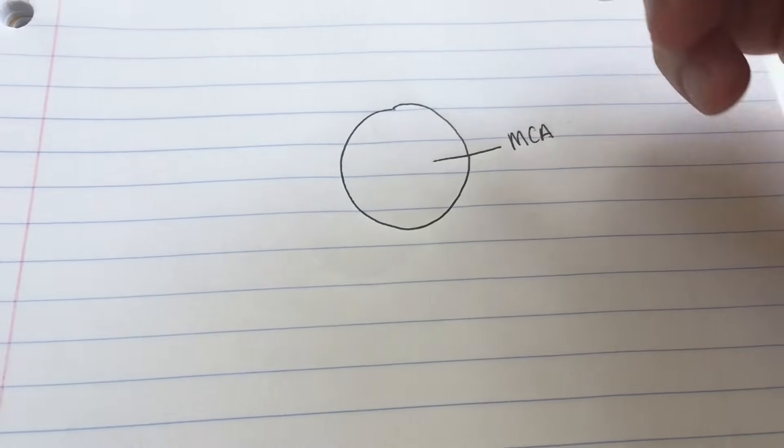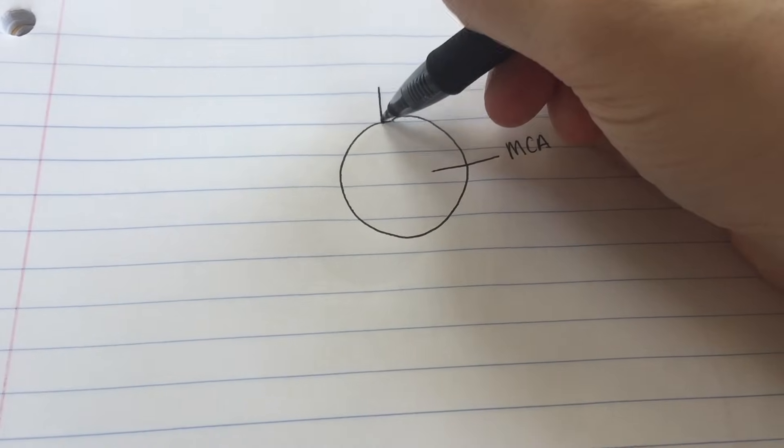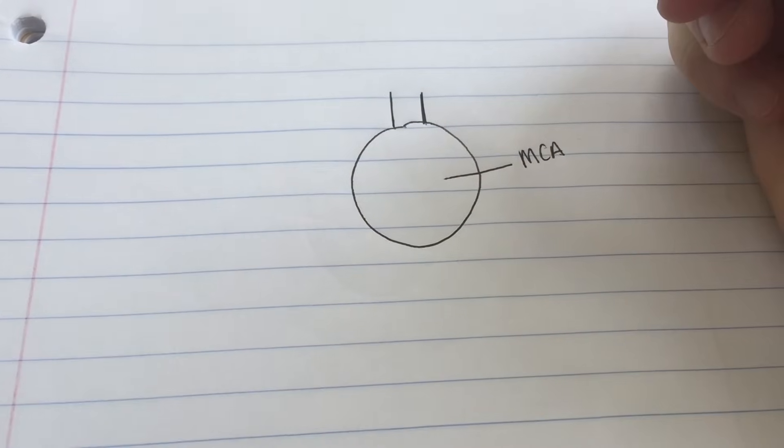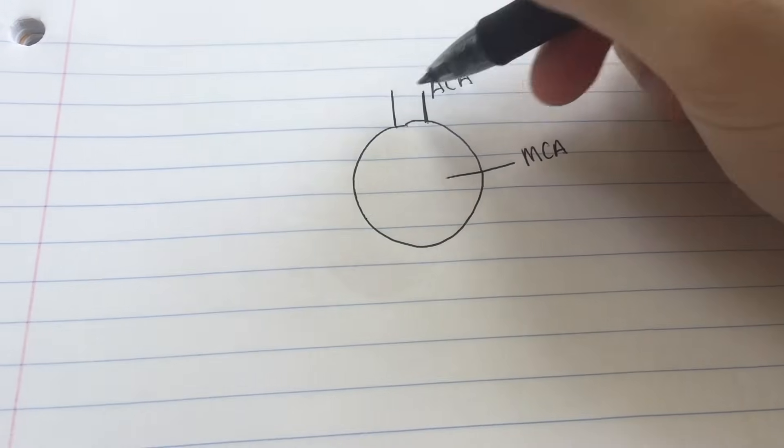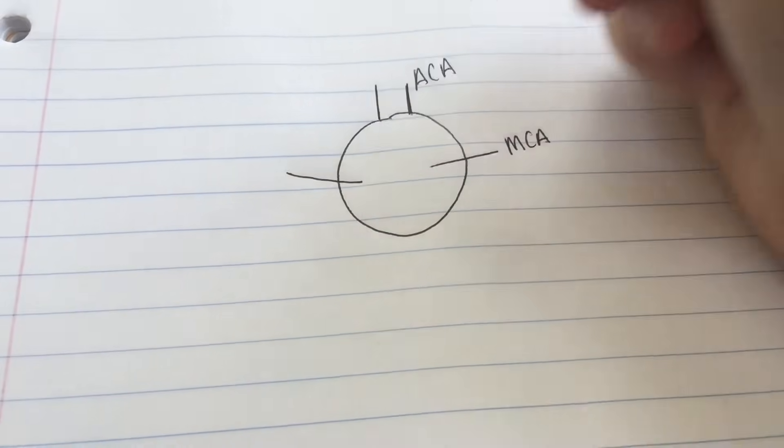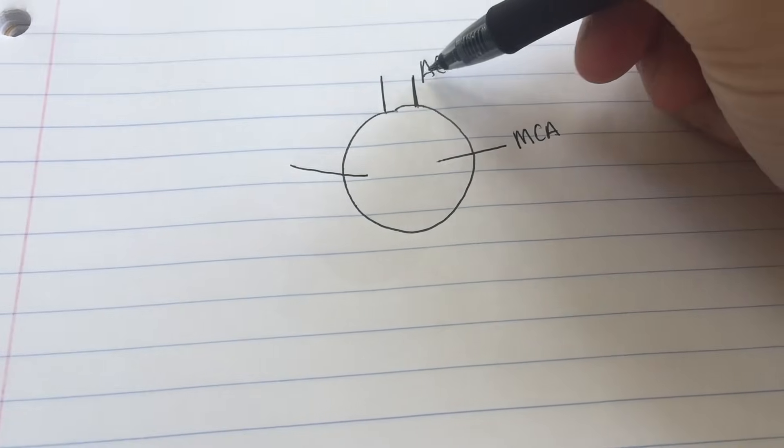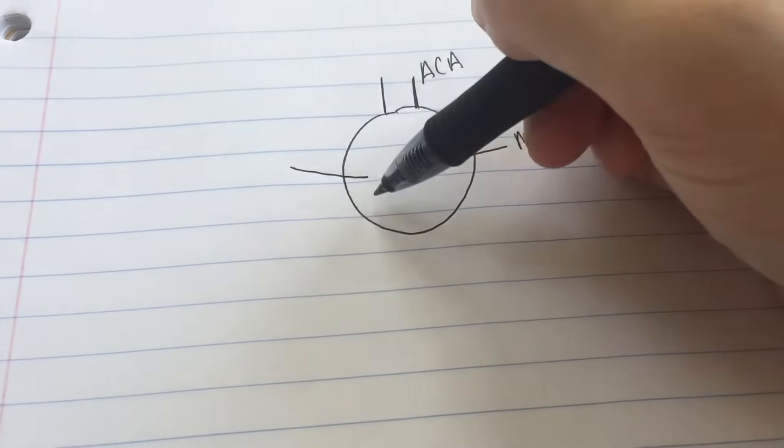The next one we're going to draw is on the anterior top portion of the cerebrum. Because it's the anterior top, it's the anterior cerebral arteries. And of course these are bilateral. So you've got the anterior cerebrals here and the middle cerebrals here.